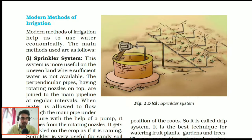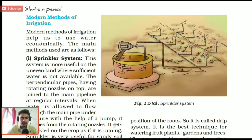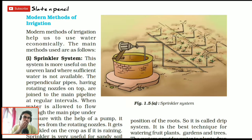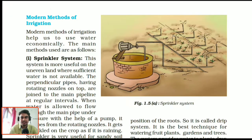In the drip system, water falls drop by drop just at the position of the root. It is the best method to water garden plants, fruit plants and trees.